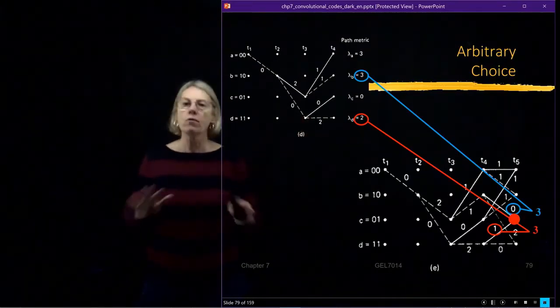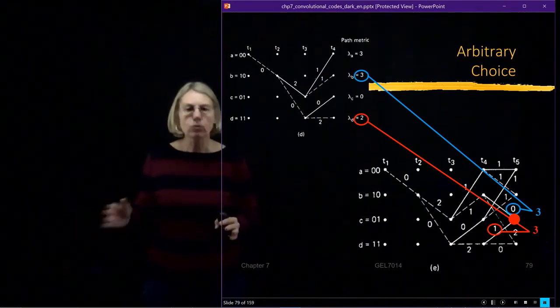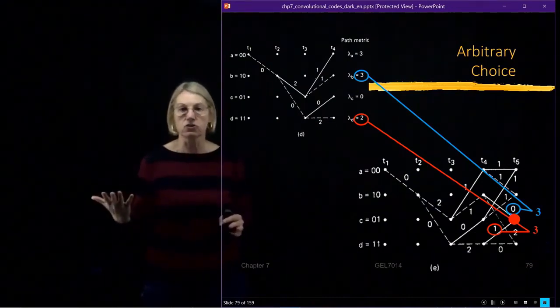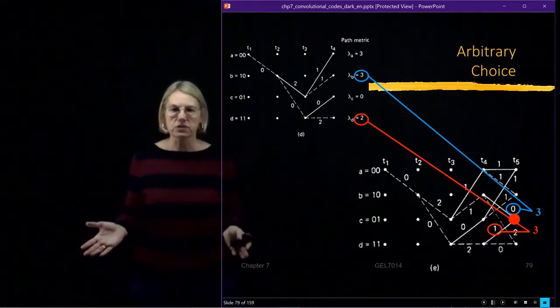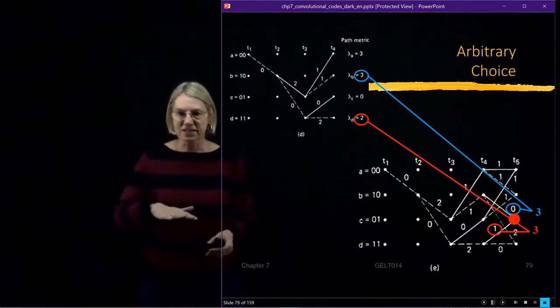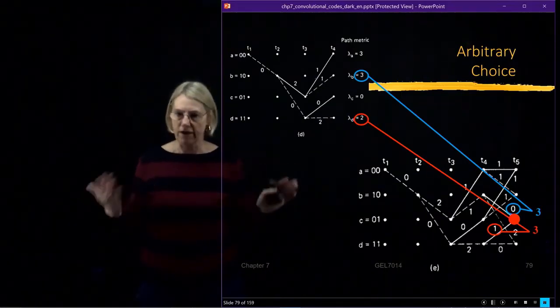Later on, it won't be better. You know, you're always going to say they're both equal length. It will never be useful to you to keep those two paths, because you will never be able to choose between them. So, since you will never know how to choose between them, you just make the decision up front, toss a coin, keep one of them, and move on.